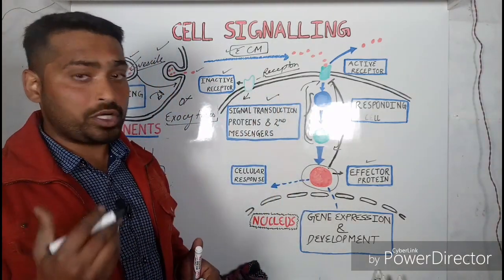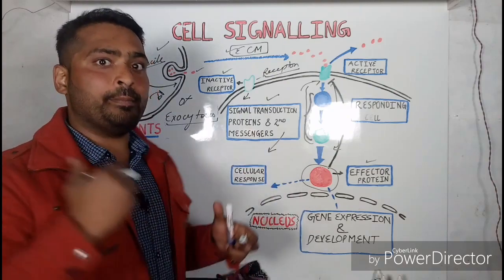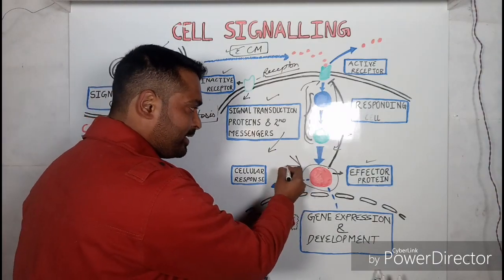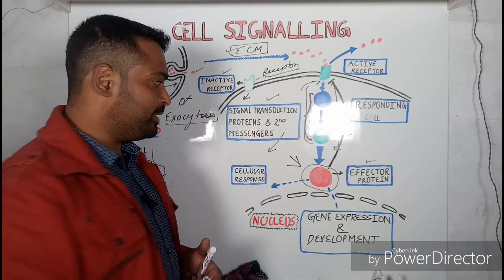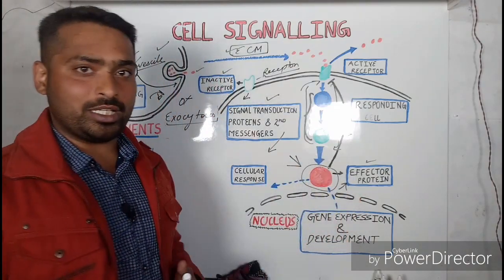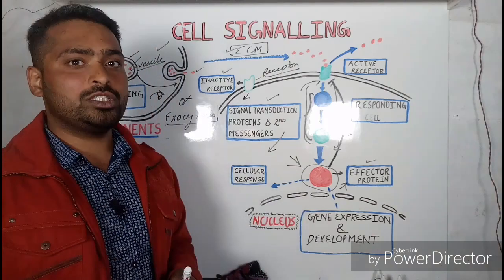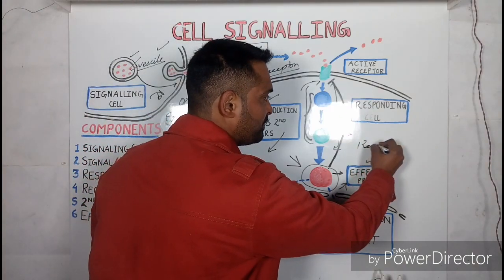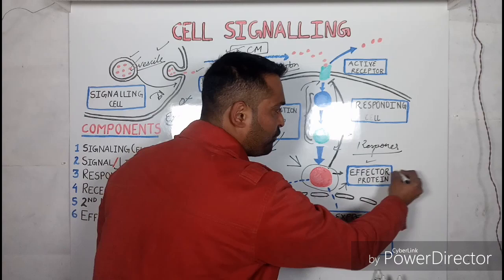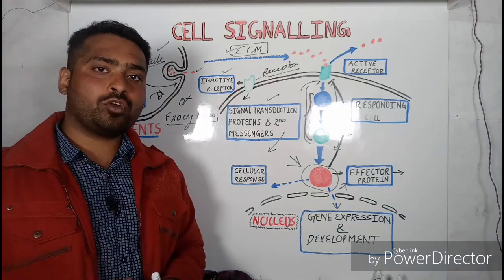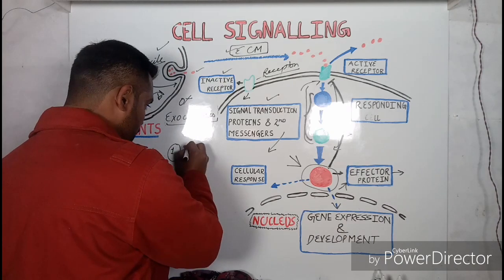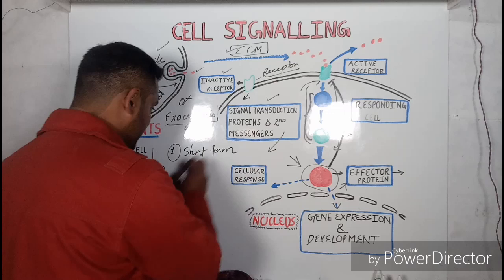The conformational change ultimately triggers the activation of the downstream molecules, which are called signal transduction proteins or second messengers. The activation of these molecules finally activates the protein known as the effector protein, which will ultimately give the results or the responses. The name 'effector' means the one which gives effect.